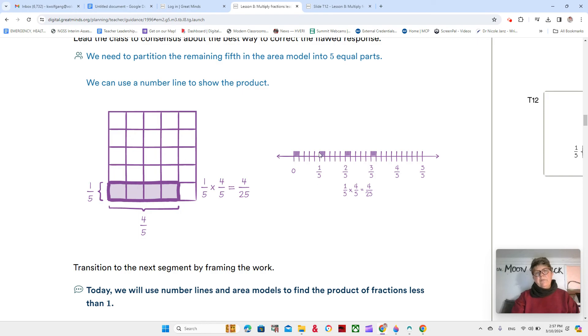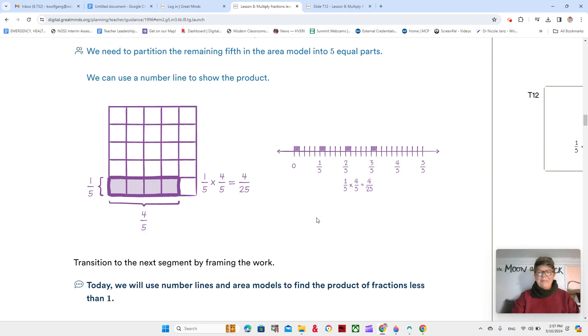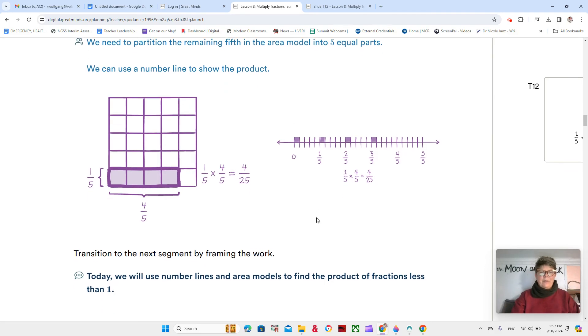So we have 1/5th, and it's broken into 5 parts and 1 of those. So 1, 2, 3, 4 out of 25 sections. Yeah, that's a little bit much to think about, isn't it? So we can practice with our number lines.